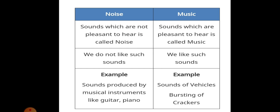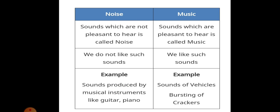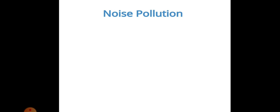What is the difference between noise and music? Sounds which are pleasant to hear are called music, and sounds which are unpleasant to hear are called noise. We like music; we do not like noise. Examples: sound produced by a musical instrument like guitar or piano is music, and the sounds of vehicles is noise.